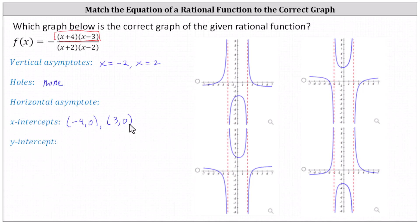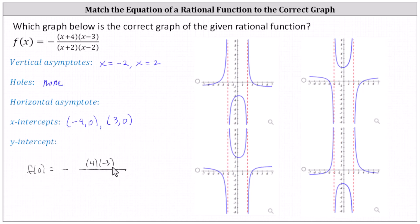When x equals three, the function value will be zero. Now to find the y-intercept, we determine the function value f of zero, because any point on the y-axis has an x value of zero. F of zero equals the opposite of: the numerator is four times negative three, and the denominator is two times negative two. Simplifying, we have the opposite of negative twelve divided by negative four, which equals the opposite of three, or negative three. The y-intercept is the point zero comma negative three.